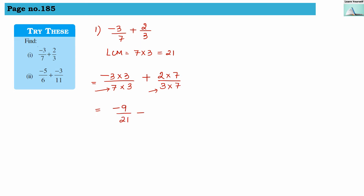This gives us minus 9 divided by 21 plus 14 divided by 21, which we write as minus 9 plus 14 divided by 21. One is negative and one is positive, so we do subtraction, giving us 5. Since 14 is bigger and has a positive sign, the answer is positive. So 5 divided by 21 is the answer.